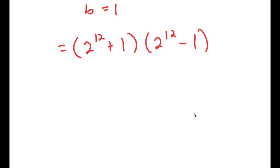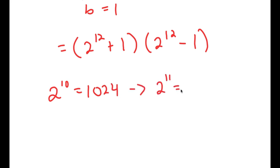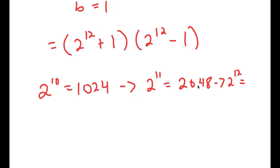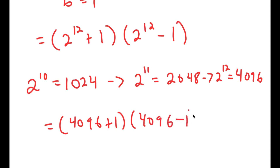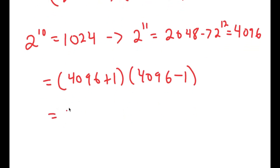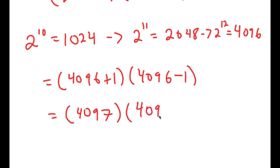Now from here, we need to find the value of 2 to the power of 12. Well, 2 to the power of 10 is equal to 1,024. So 2 to the power of 11 is equal to double of 1,024, which is 2,048. And 2 to the power of 12 is equal to double of 2,048, which is 4,096. So now I have 4,096 plus 1, times 4,096 minus 1. That gives us 4,097 times 4,095.